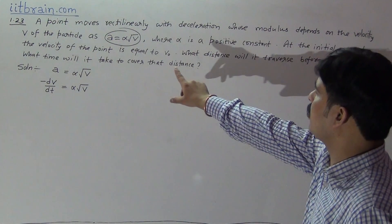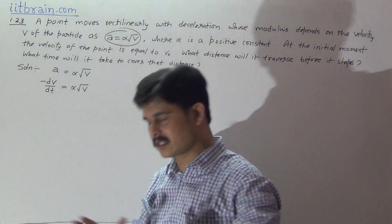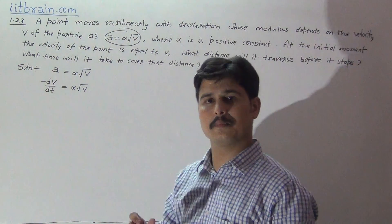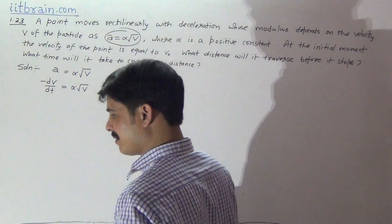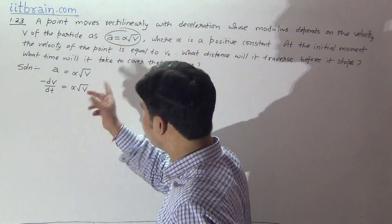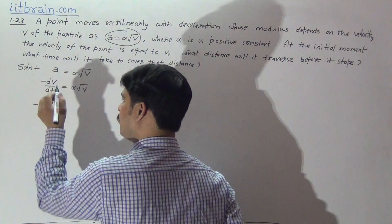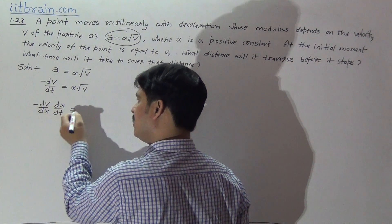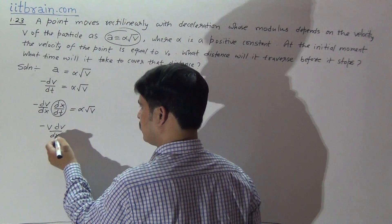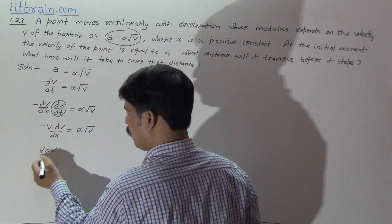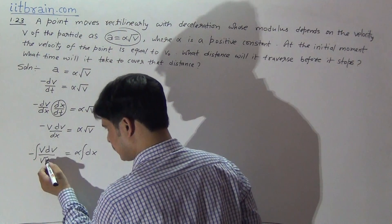At the initial moment the velocity of the point is equal to v₀. We have to calculate the distance where the particle's velocity is reduced from v₀ to zero. For finding this type of result, it is necessary to make a relation between v and x. For making a relation of this type, you should write dv by dt as dv by dx into dx by dt equal to alpha root v. This dx by dt is again velocity, so it is minus v dv by dx equal to alpha root v.